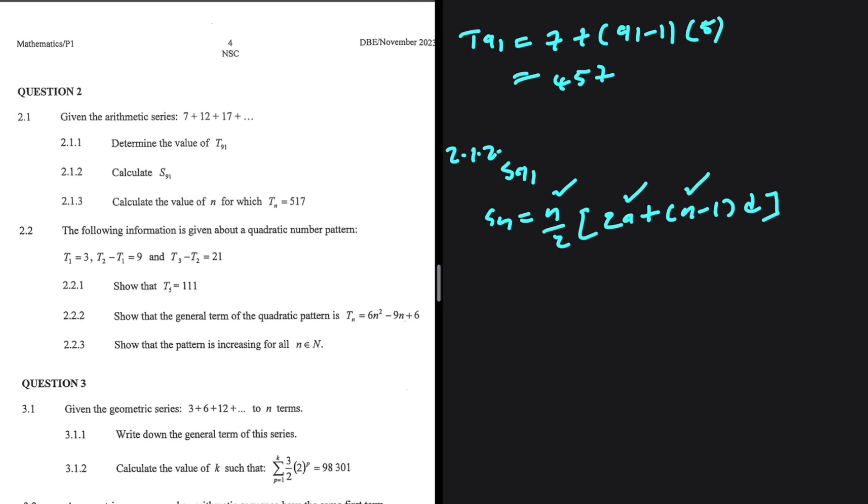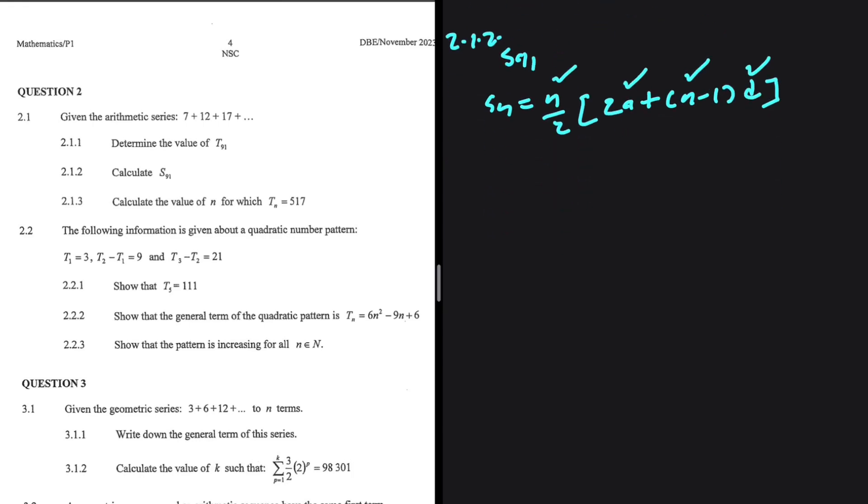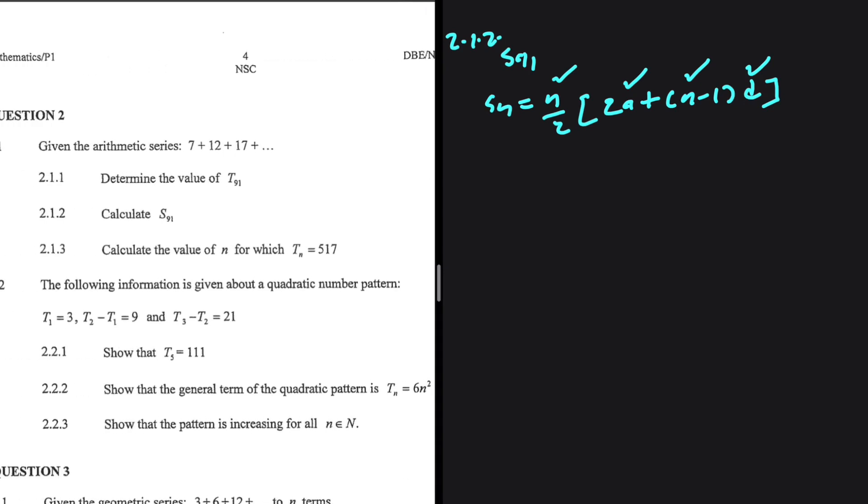A is the first term. N we've already answered that. And D is the common difference. So let's go ahead and substitute. Quite an easy one, to be honest. 2 marks.